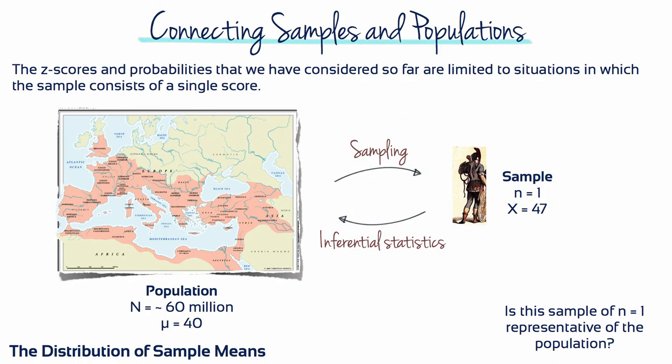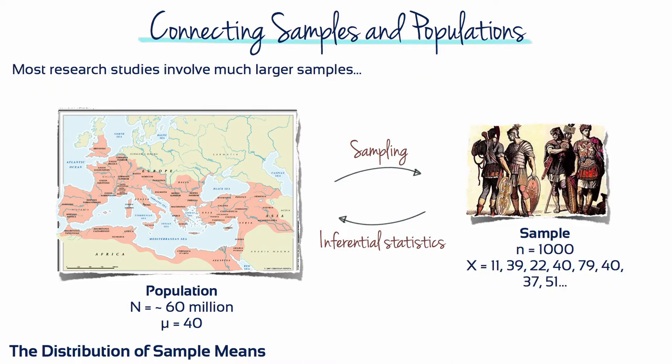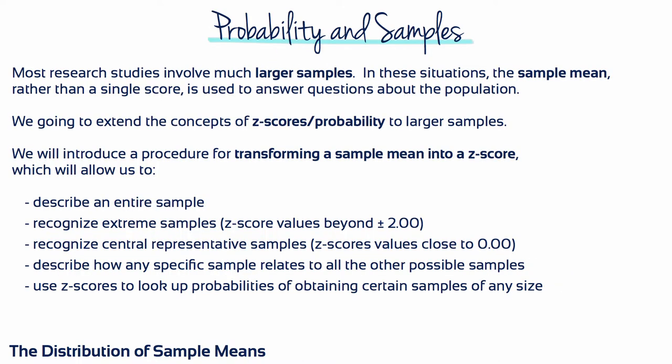The z-scores and probabilities that we have considered so far are limited to situations in which the sample consists of a single score. Most research studies involve much larger samples, such as N equals 40 children with appendicitis, or N equals 500 people with seasonal pollen allergies. In these situations, the sample mean rather than a single score is used to answer questions about the population.